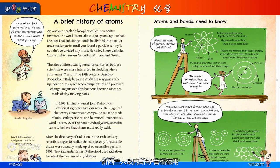In 1909, New Zealander Ernest Rutherford used radiation to detect the nucleus of a gold atom.